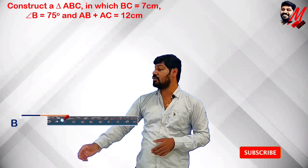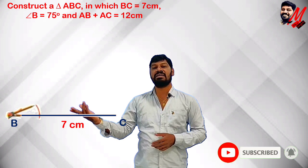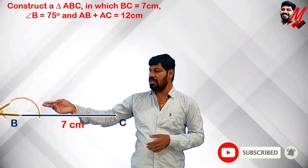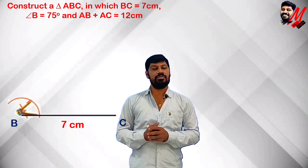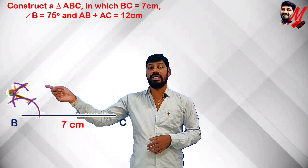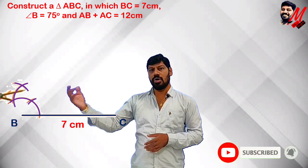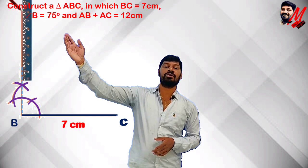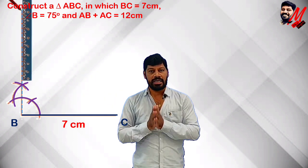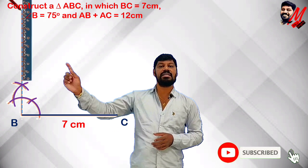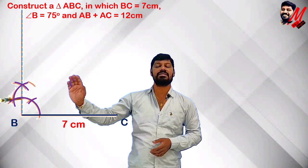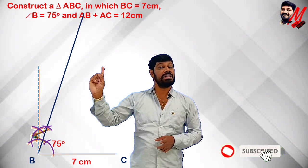Draw line segment BC equal to 7 cm. At point B, construct an angle of 75 degrees. To do this, first draw an arc with a convenient radius. Mark 60 degrees, then 120 degrees. The angular bisector of the 60-to-120 degree arc gives 90 degrees. Then bisect the angle between 60 degrees and 90 degrees, which gives us 75 degrees. This dotted line along the 75-degree angle is our construction ray from B.